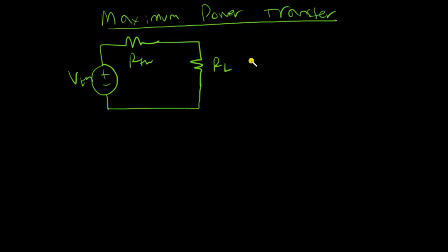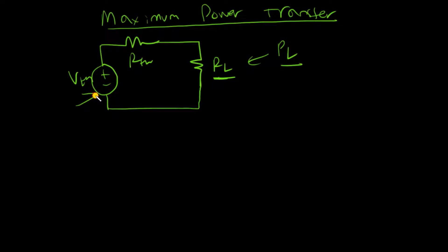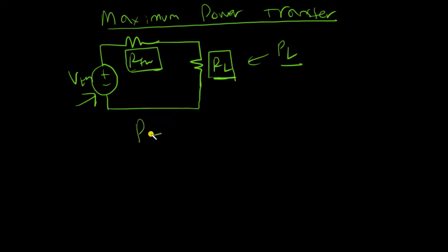What I actually want is for the power consumed by this load to be maximum — PL to be maximum. There is one component in this circuit which is supplying power: the voltage source. There are two components, R_thevenin and RL, which are consuming power. So I want R_thevenin to consume the least power and RL to consume the maximum amount of power.